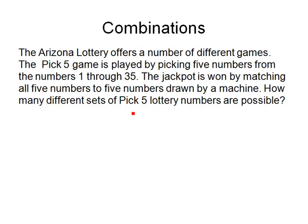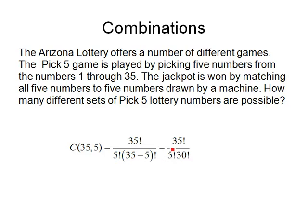From the 35 lottery numbers, we need to pick 5. So we need C(35,5), which is 35 factorial divided by 5 factorial times 30 factorial. When we work that out, we get 324,632 different combinations of numbers that you could pick, and only one of those is going to be a winning number.